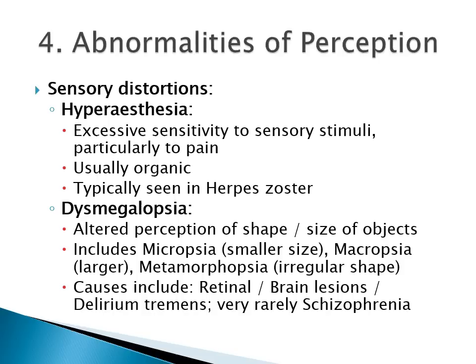Sensory distortions include hyperasthesia and dysmegalopsia. In hyperasthesia, there is excessive sensitivity to sensory stimuli, especially to pain — it usually has an organic cause and is typically seen in herpes zoster. In dysmegalopsia, there is altered perception of the shape and size of objects: the patient might perceive objects as smaller than normal (micropsia), larger than normal (macropsia), or of very irregular shape (metamorphopsia). It tends to be organic, with retinal or brain lesions or delirium tremens being more common, and rarely occurs in schizophrenia.